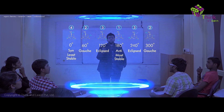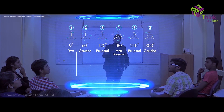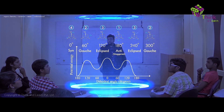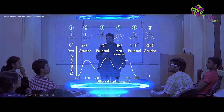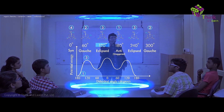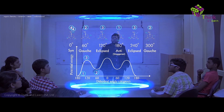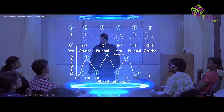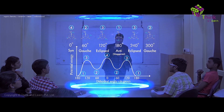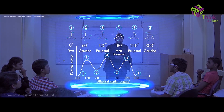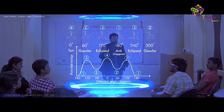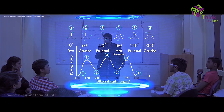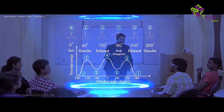Now let's plot the energy graph. This graph has two peaks because we had two similar eclipsed conformations. It starts from the bottom at anti, rises to a peak, comes back down, rises again, and returns to the bottom — showing all five conformations of butane. If you understand the conformations of butane, drawing conformations for any molecule becomes easy: just focus on two carbons and everything else becomes a substituent.